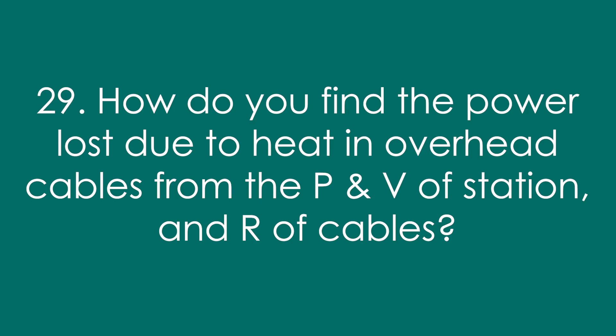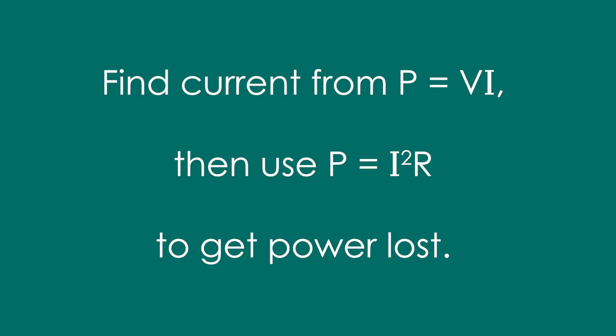Question 29: How do you find the power lost due to heat in the overhead cables, given the power and voltage of the station and the resistance of the cables? Don't use V²/R, because the voltage from the power station is the voltage across the whole national grid. Instead, find the current from P = VI from the station, then use I²R to get the power lost.